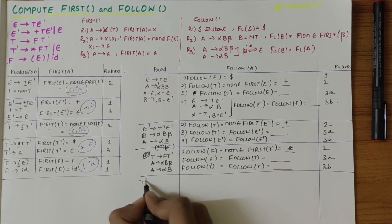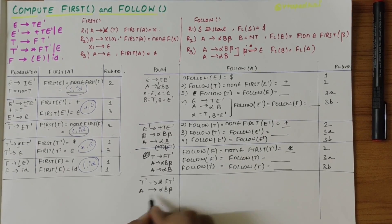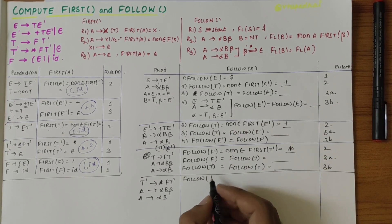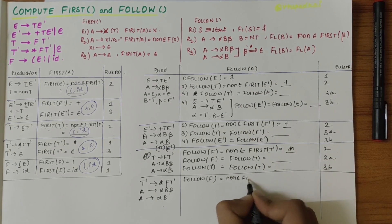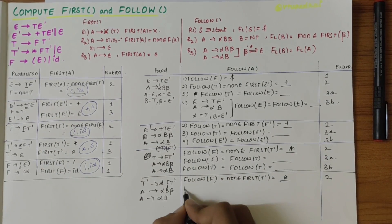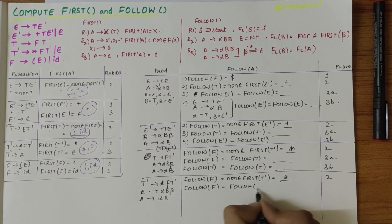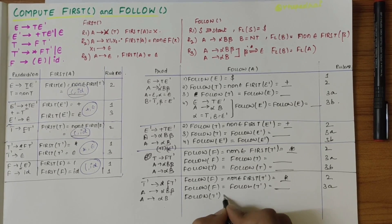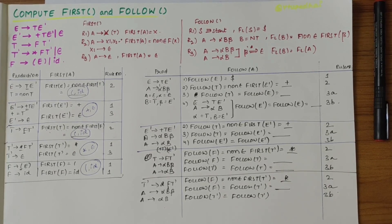For T' derives *FT': comparing with A derives alpha B beta, by rule two follow of F is equal to non-epsilon first of T', which is '*'. By rule 3a, follow of F also equals follow of T', which is unknown. Comparing with A derives alpha B, follow of T' equals follow of T', which is the same — rule 3b, no new information.